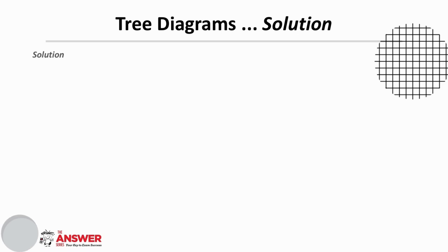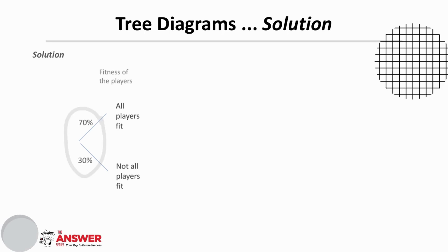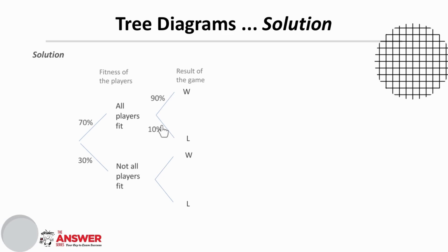For the tree diagram, let's first consider the fitness of the players. We will make the first branch 'all players fit' and the second branch 'not all players fit.' We are given that the probability that this team has all its players fit is 70%, so we put that here, and we then know that the probability of 'not all players fit' will be 30% because these must add up to 100%. From each of these we will then have whether the team wins or loses. We are told that the probability they will win if all their players are fit is 90%, so we place 90% here and can then place 10% along here.